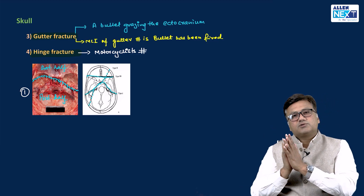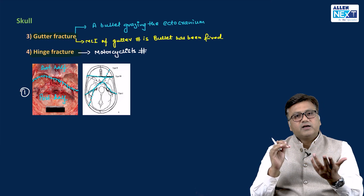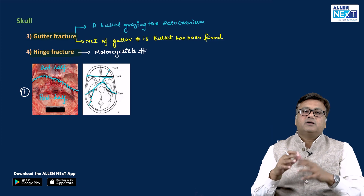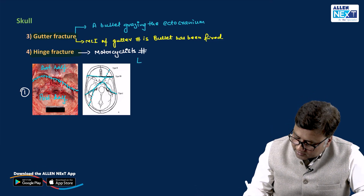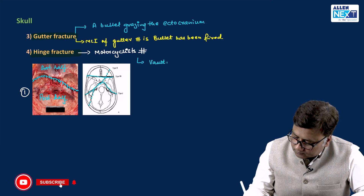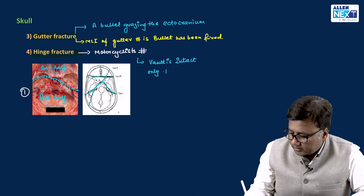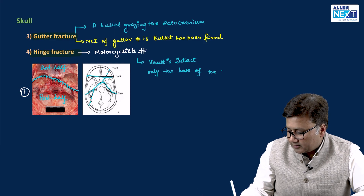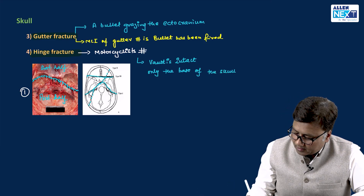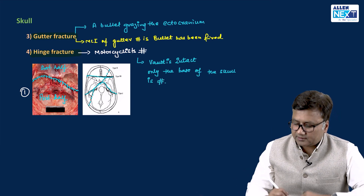All these fractures are possible in road traffic accidents involving two-wheeler drivers. The vault remains intact; the key thing to remember is that only the base of the skull is fractured.